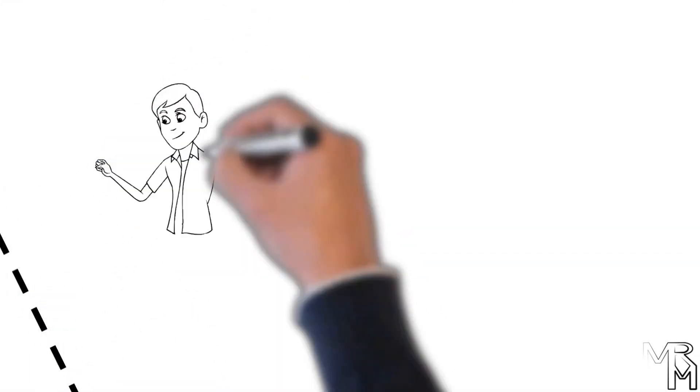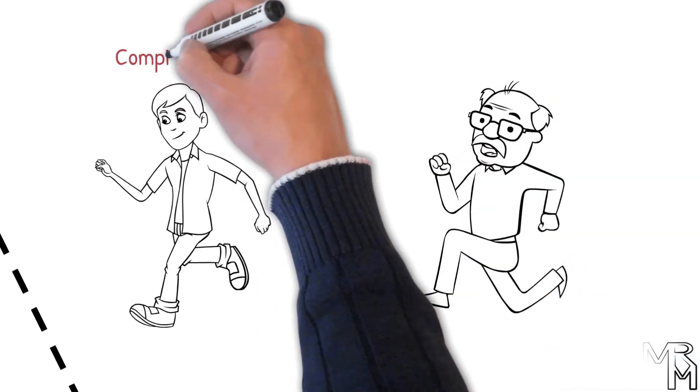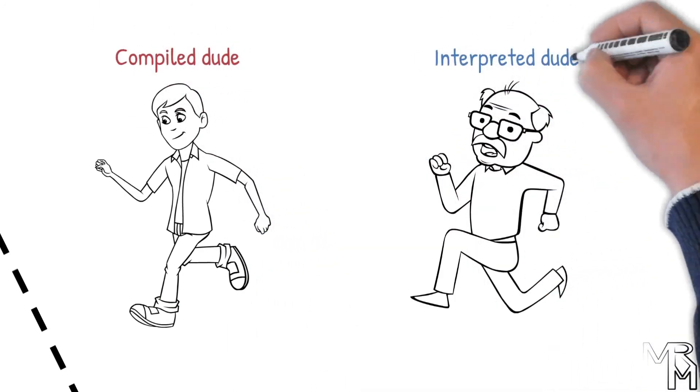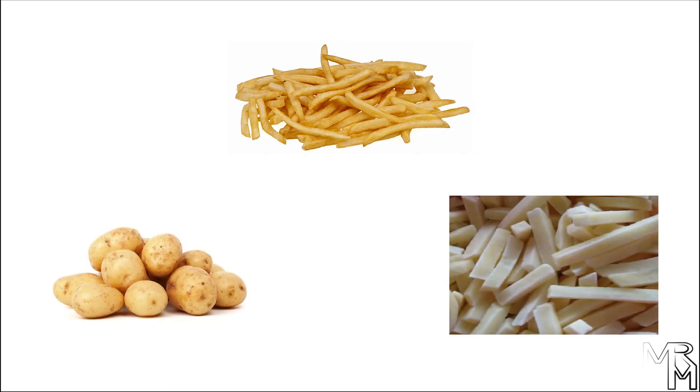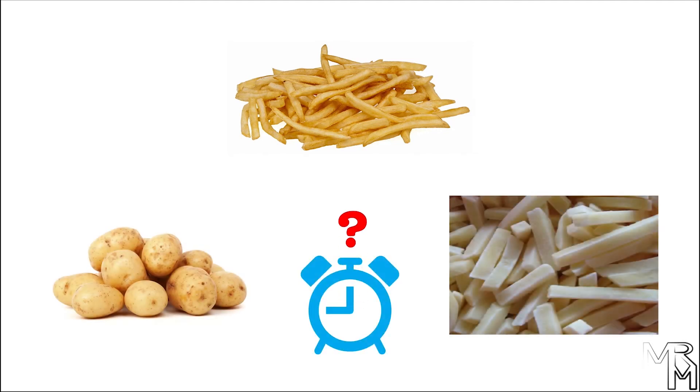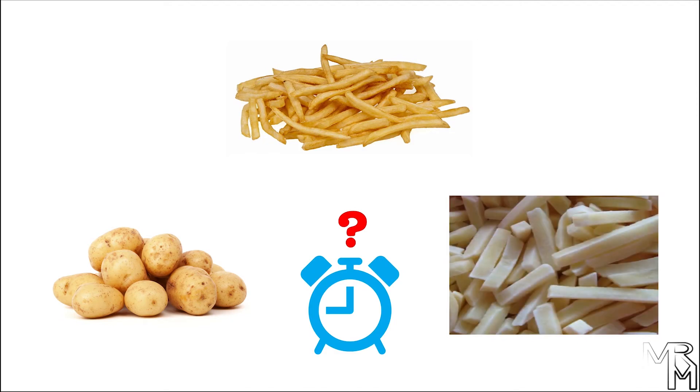Because compilation happens before runtime, compiled programs are generally faster than their interpreted analogs. Why? Imagine making fries from potatoes as opposed to making them from frozen potato strips — which one do you think will take less time? Right, using the pre-processed potatoes. In other words, because compilation happens before runtime, when you start a compiled program, your computer begins executing the program right away. Alternatively, when you run interpreted code, before the computer can execute it, it needs to do an additional step of translating the code into machine code.